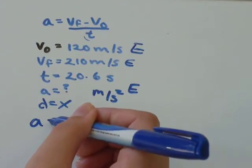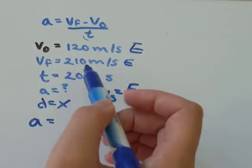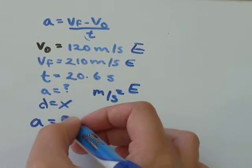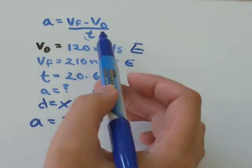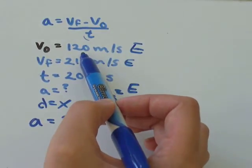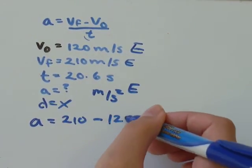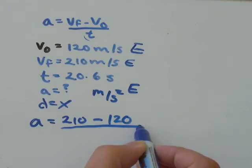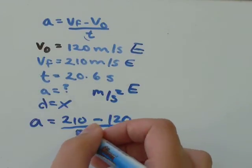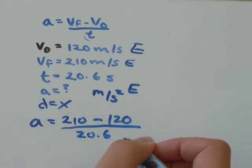a we don't know, so we'll leave that blank. Vf was 210 meters per second east, minus V₀ was 120 meters per second, all divided by time which was 20.6 seconds.